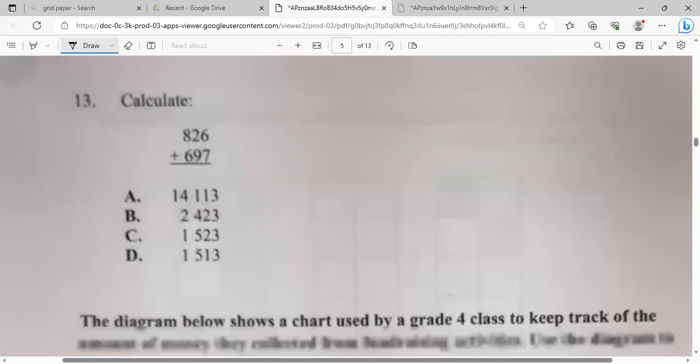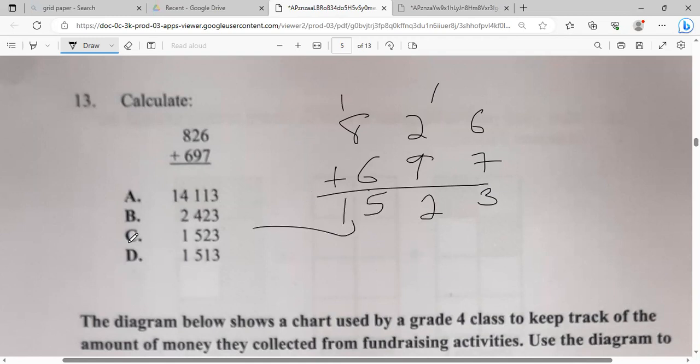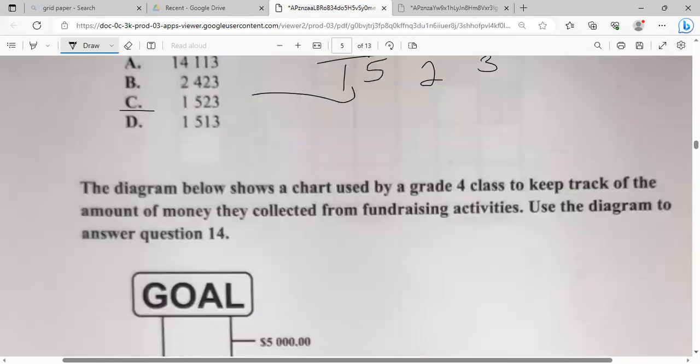What about number thirteen? Calculate 826 plus 694. So that's 826 plus 694. Seven, nine, six, thirteen. Three, carry one. Remember, we're adding. Nine, nine, two, eleven, and one, twelve, two, carry one. Eight, and six, one, and five. That gives us fifteen. So it's one thousand, five twenty-three. And guys, you have to multiply it. Let's add.